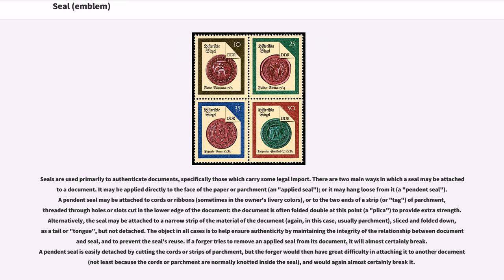Seals are used primarily to authenticate documents, specifically those which carry some legal import. There are two main ways in which a seal may be attached to a document: it may be applied directly to the face of the paper or parchment — an applied seal — or it may hang loose from it — a pendant seal. A pendant seal may be attached to cords or ribbons, sometimes in the owner's livery colors, or to the two ends of a strip or tag of parchment threaded through holes or slots cut in the lower edge of the document.